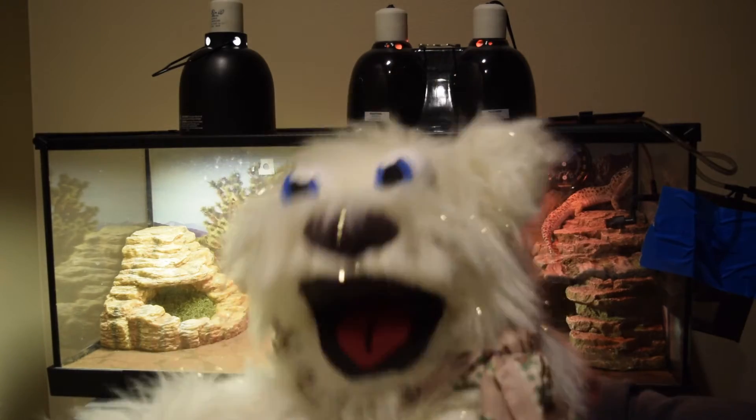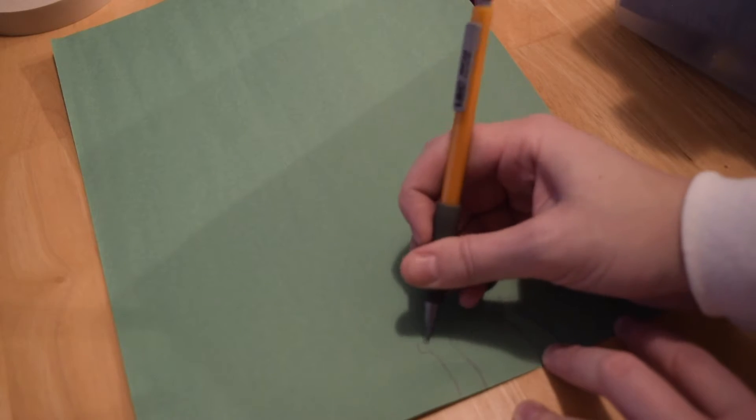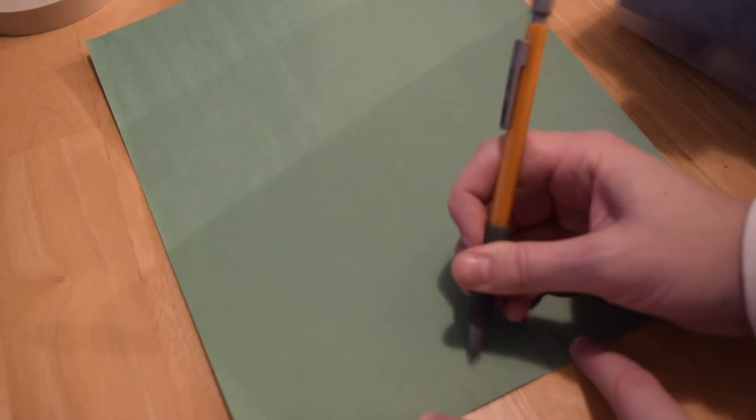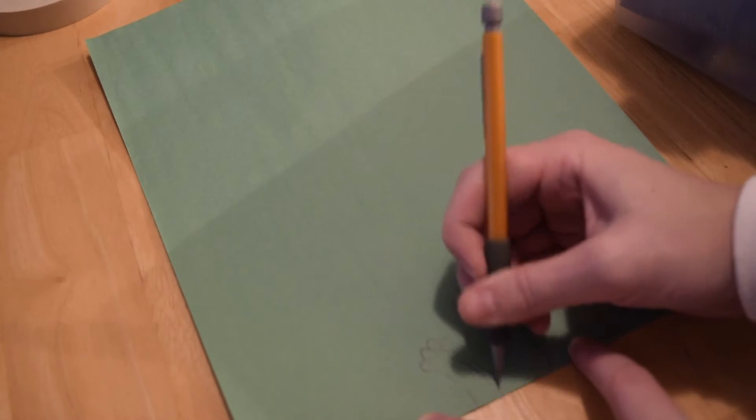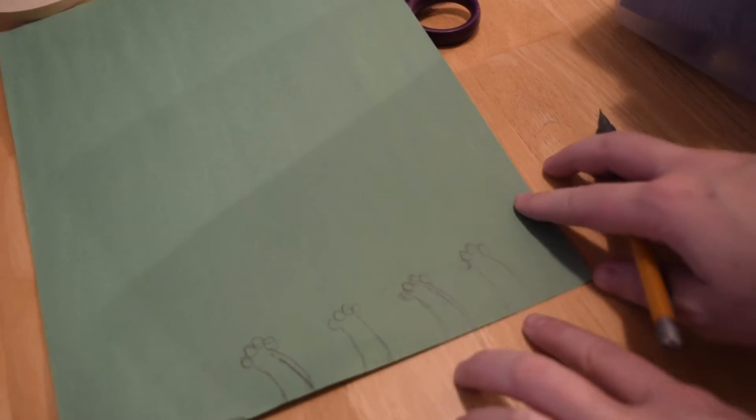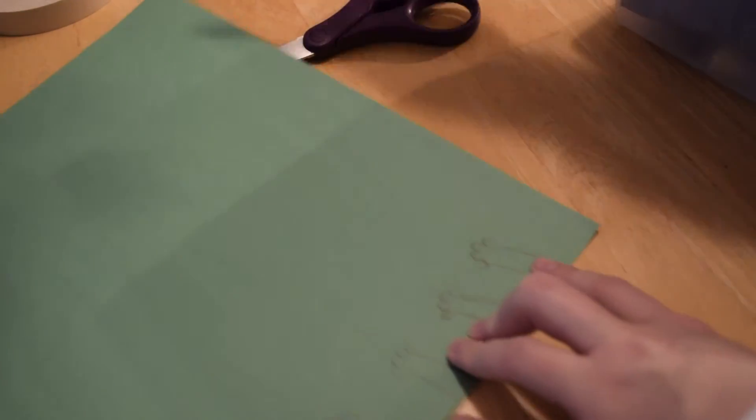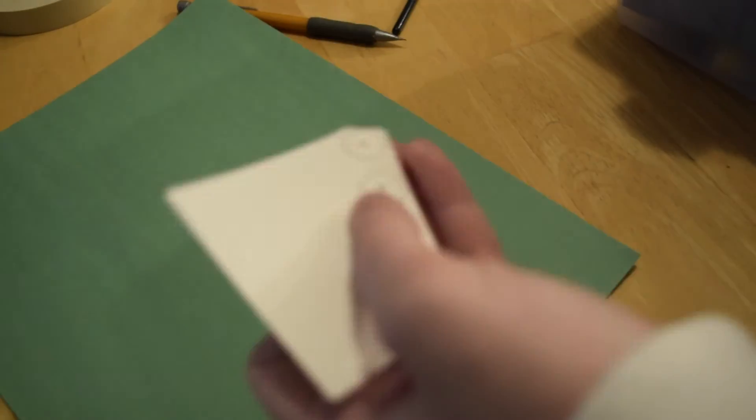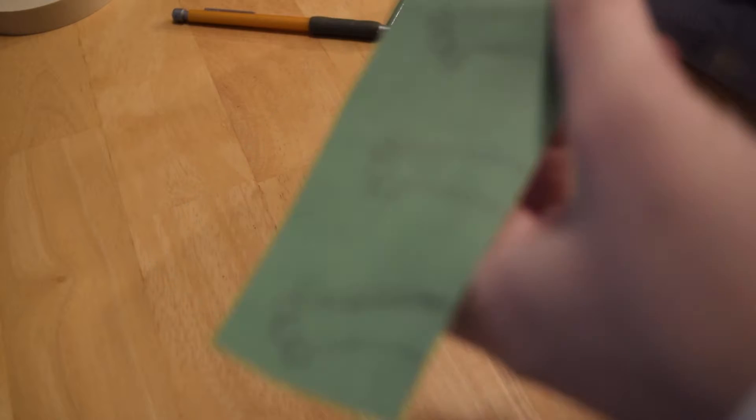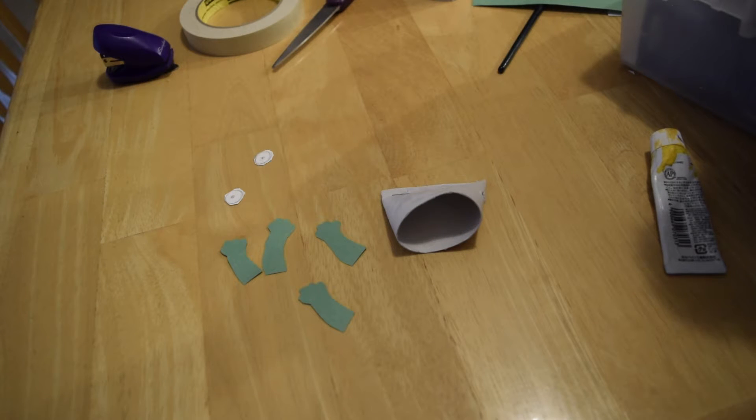So now that we have our frog legs and our frog eyeballs, the next step is just going to be to cut them out. Now that we have all of the pieces of our frog, it is time to paint some colors onto the body.